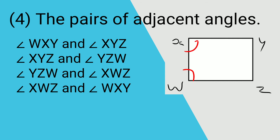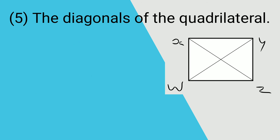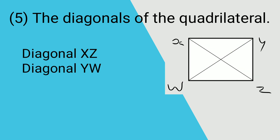Then the last question is the diagonals of the quadrilateral. A quadrilateral has two diagonals. A diagonal is the line segment which joins the opposite angles. X and Z are opposite angles, so line segment XZ is a diagonal. Line segment WY is also a diagonal. So the diagonals of quadrilateral XYZW are XZ and WY.